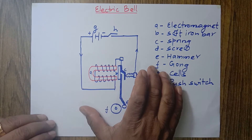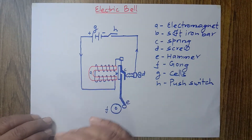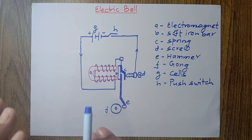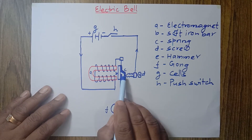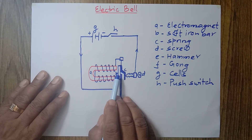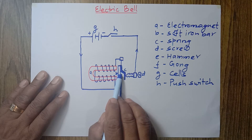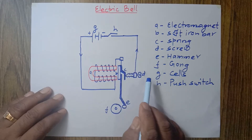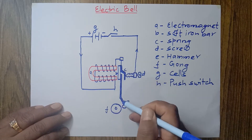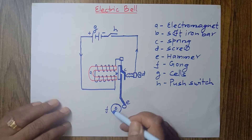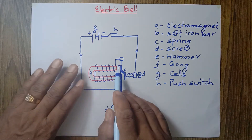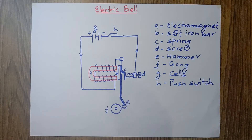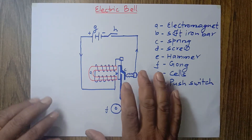When the circuit becomes incomplete, the electromagnet loses its magnetism, because an electromagnet is a temporary magnet. Whenever current flows it gains magnetism, and when current stops it loses magnetism within a fraction of a second. When it loses magnetism, the soft iron bar is no longer attracted and goes back. Again the spring comes in contact with the screw, the circuit is completed, and the same process repeats. The hammer moves forward, hits the gong, and due to this alternate connection and disconnection the hammer hits the gong repeatedly — maybe two or four times per second — and that is why the bell rings.